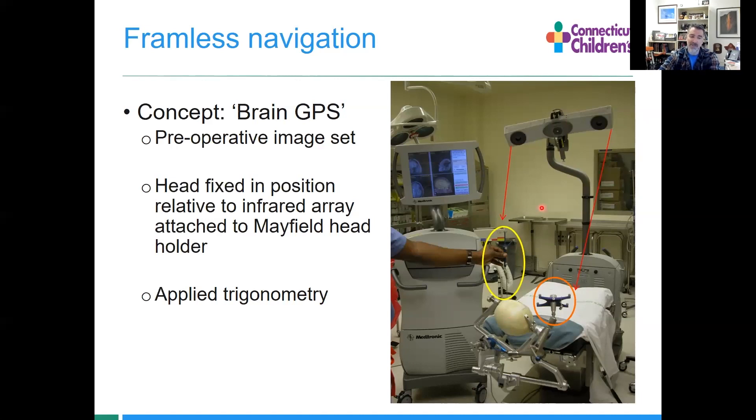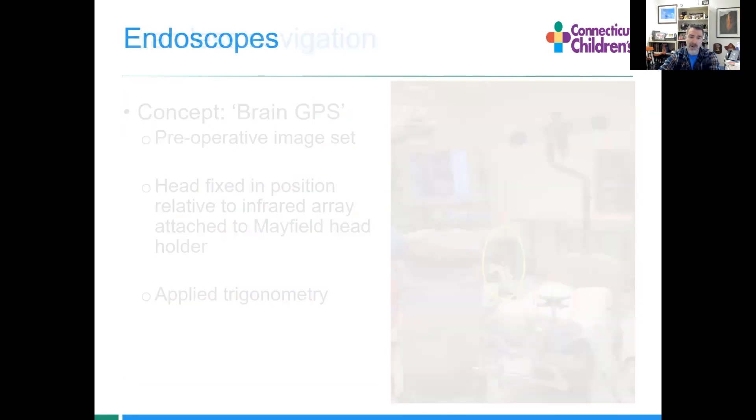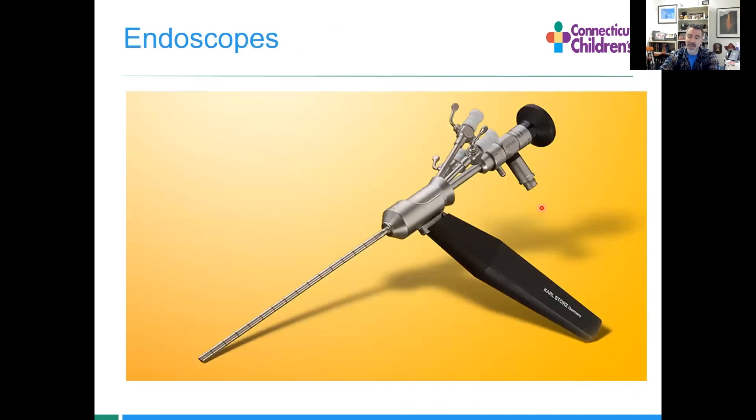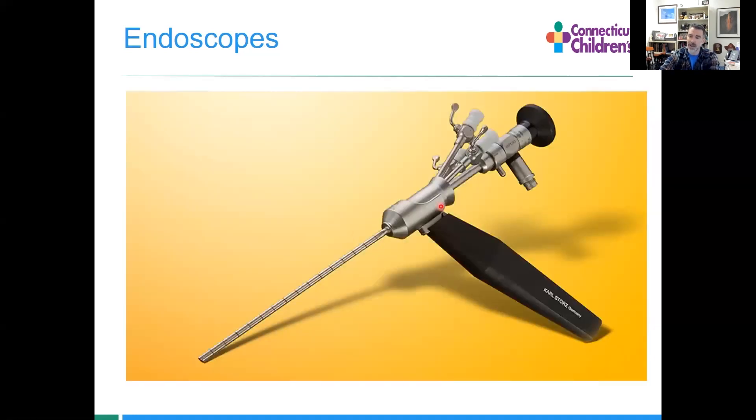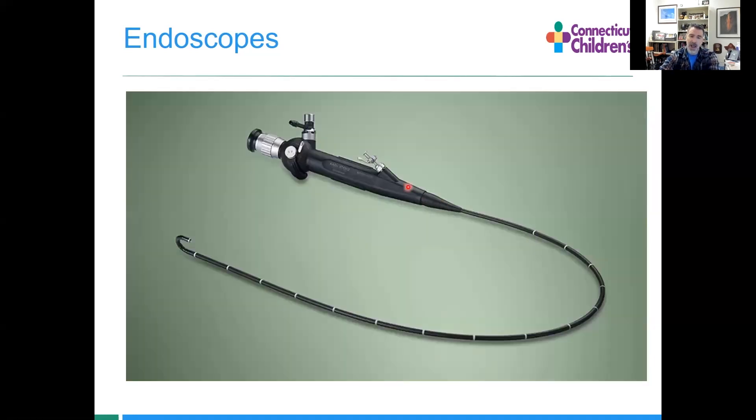We have a variety of endoscopes: rigid endoscopes and flexible endoscopes. The optics are slightly different. For the rigid endoscope it's a glass rod. We've got fiber optics for the flexible endoscope, so the picture is usually a little less clear.